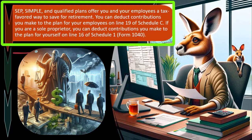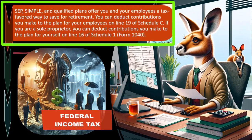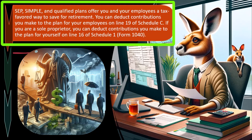A SEP, SIMPLE, and qualified plans offer you and your employees a tax-favored way to save for retirement. You can deduct contributions you make to the plan for your employees on line 19 of Schedule C. If you're putting money into a SEP for employees, that's a business expense deductible on Schedule C — a deduction for both federal income tax and Social Security. However, if you're a sole proprietor, you deduct contributions you make for yourself on line 16 of Schedule 1.